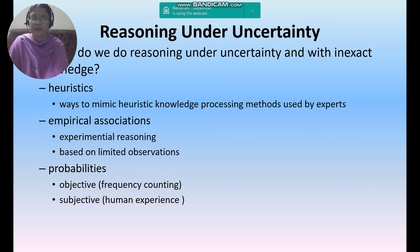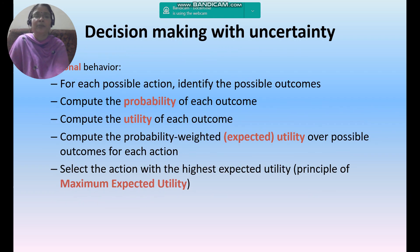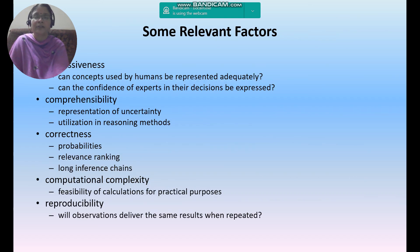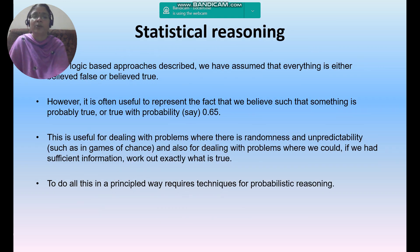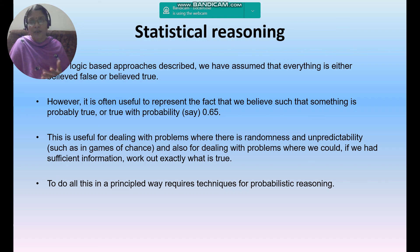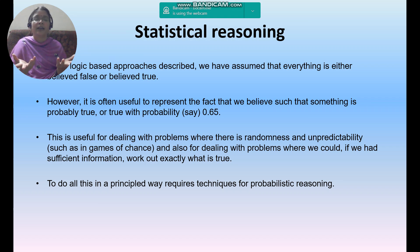So, decision reasoning under uncertainty uses heuristics, empirical associations, and probabilities. Decision making with uncertainty requires these five considerations. The relevant factors are expressiveness, comprehensibility, correctness, computational complexity, and reproducibility. In coming videos, we will discuss static reasoning, statistical reasoning, Bayesian reasoning, Bayesian belief networks, and various kinds of learning methods. Please subscribe to my channel, Intelligible Tutorials. Thank you one and all.